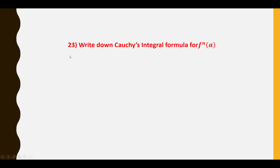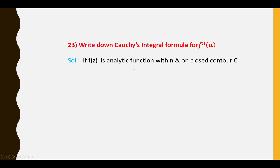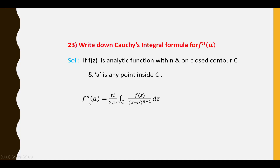Twenty-third question: Write down Cauchy's integral formula for the nth derivative F⁽ⁿ⁾(a). If F(Z) is analytic within and on closed contour C and a is any point inside C, then F⁽ⁿ⁾(a) = (n!/2πi) ∮_C F(Z)/(Z − a)^(n+1) dZ.